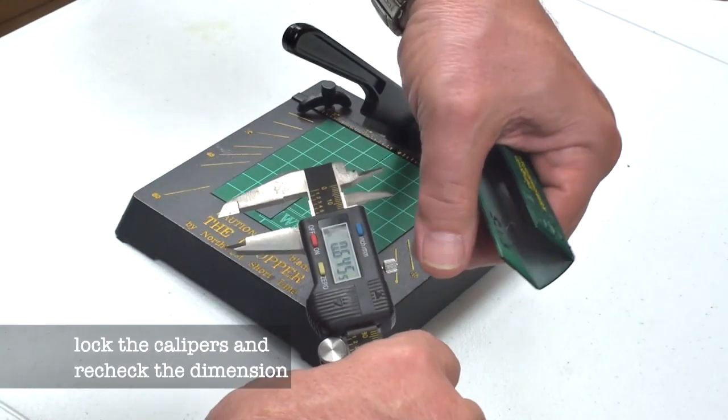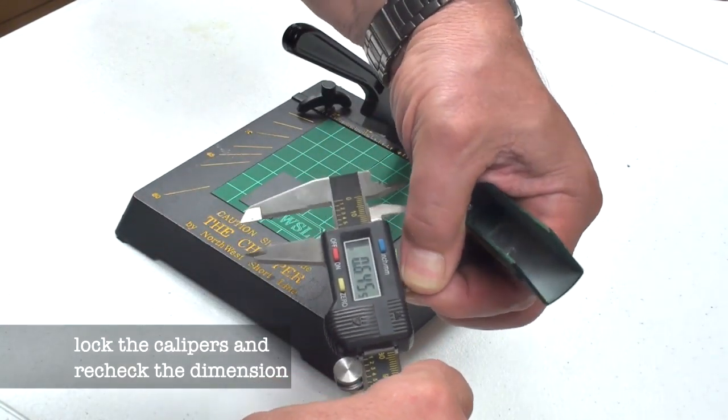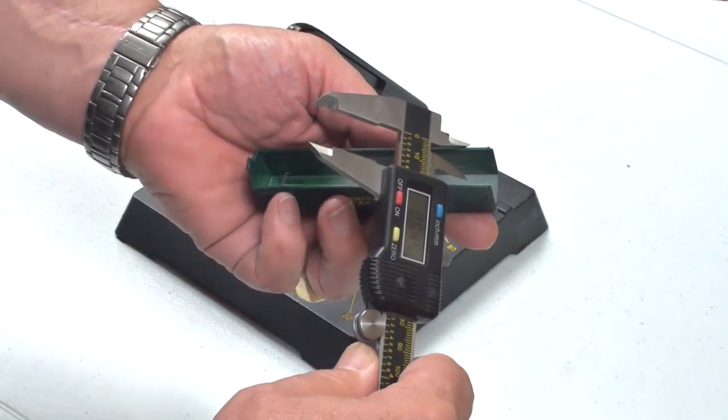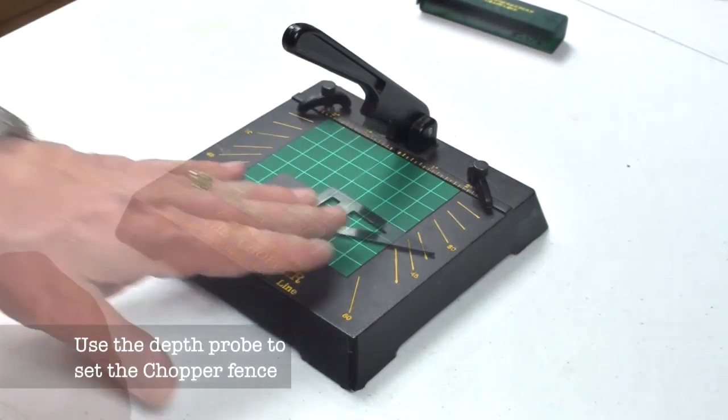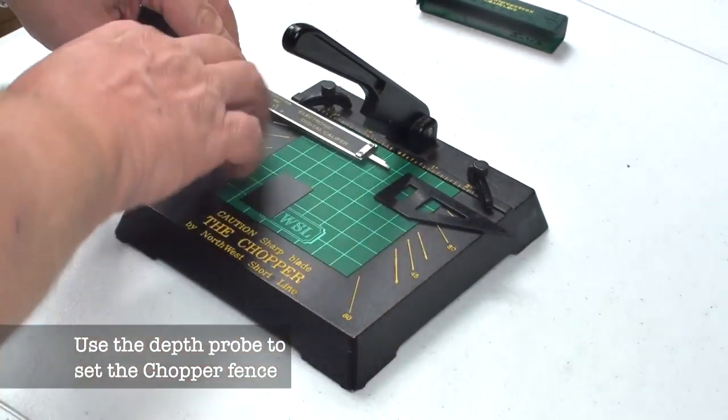So when I have a nice sliding fit I lock the calipers, check the dimension again, and then I'm going to transfer that dimension to the chopper using the chopper fence.